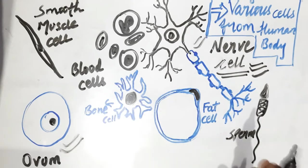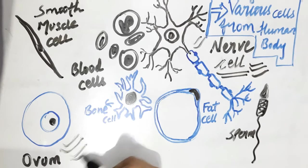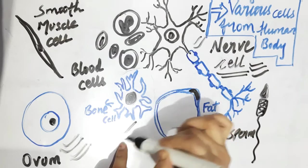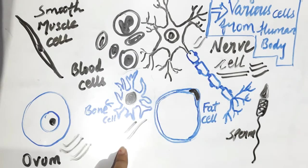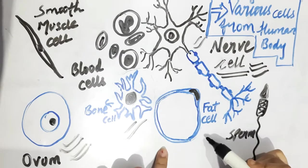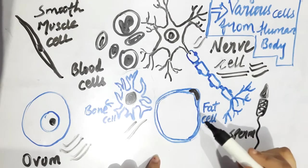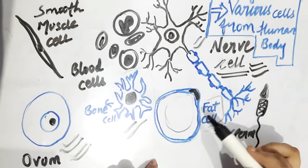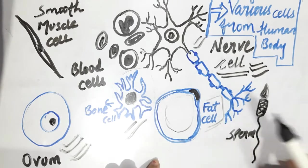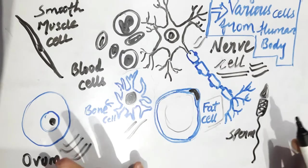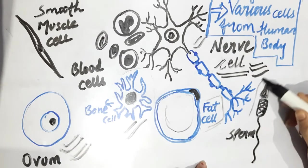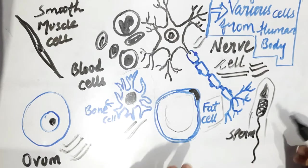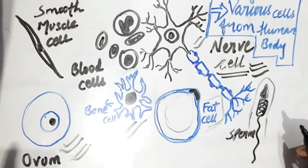On this slide, we also have other types of cells. This is a bone cell. This is a fat cell. And this is sperm and ovum — the reproductive cells.